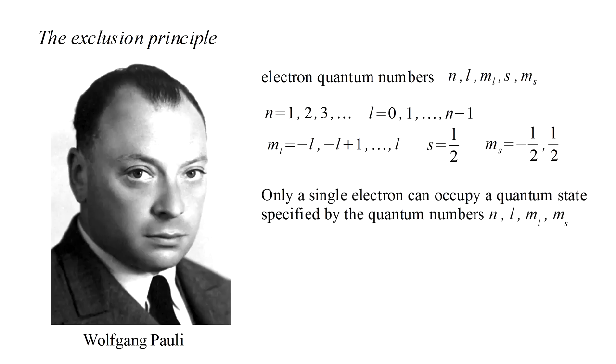Pauli's exclusion principle states that only a single electron can occupy a quantum state specified by the four quantum numbers n, l, m sub l, and m sub s. We don't bother listing s, since that's fixed at one half for all electrons.